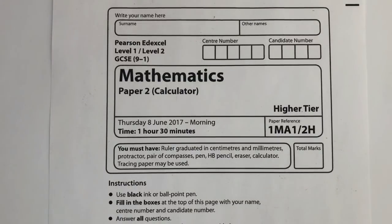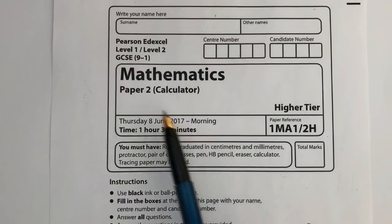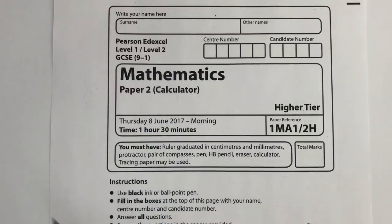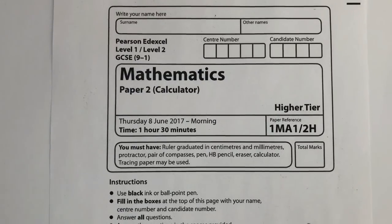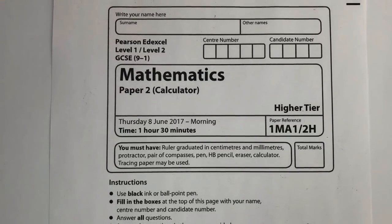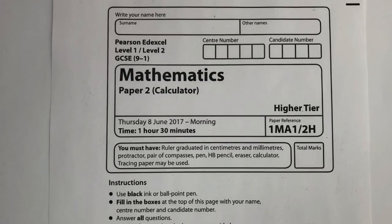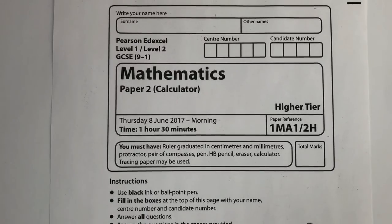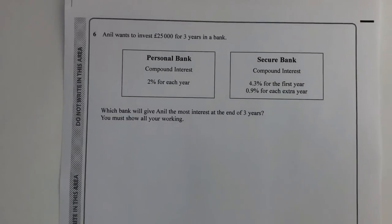This is video number two in the playlist where we've been looking at the 2017 paper - the calculator paper for edexcel higher tier. In the previous video we finished at question number five, so we're going to move on with question number six in this video, through to around 25 minutes to half an hour. That should give you a good amount of revision if you keep stopping and starting the video. If you follow the link below in the description you'll be able to download the paper and have a go.